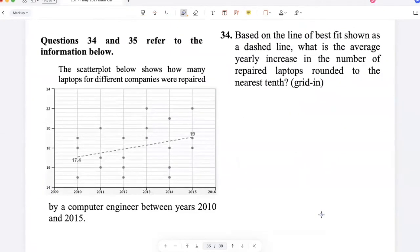The scatter plot shows how many laptops for different companies were repaired by a computer engineer between years 2010 and 2015. Based on the line of best fit shown as a dashed line, what is the average yearly increase in the number of repaired laptops rounded to the nearest tenth? The average yearly increase will be the slope of this line. The slope will be 19 minus 17 by 4, over 5 years. So that's 1.6 by 5, which is 0.32. Rounded to the nearest tenth would be 0.3.